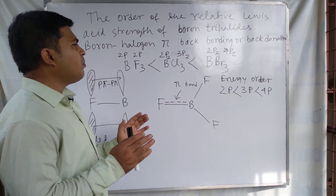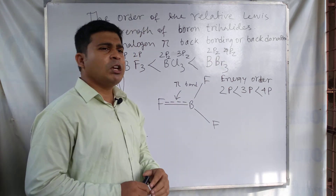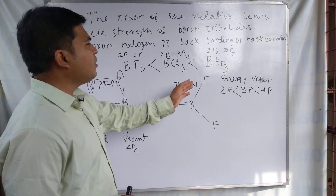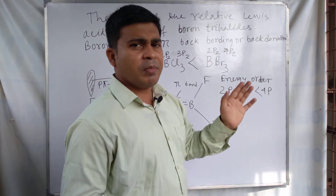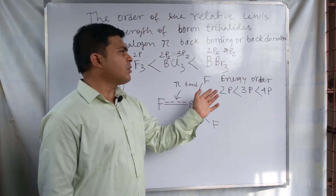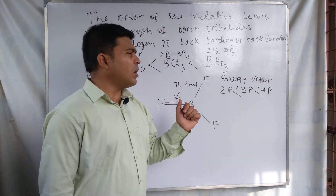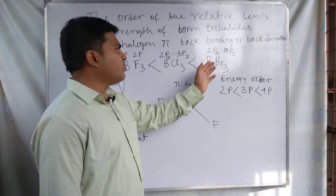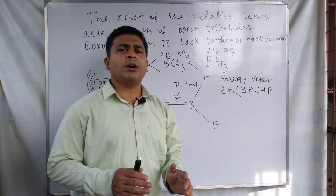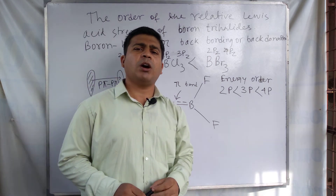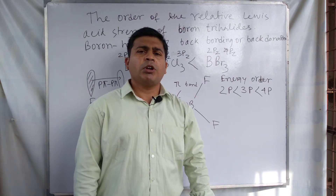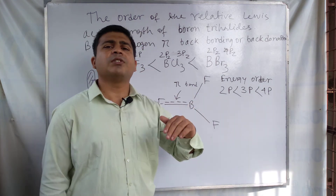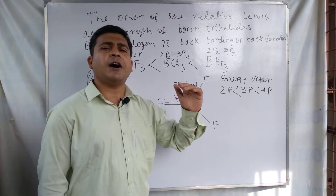Since pi back donation is decreased in BBr3, the electron density of boron is not removed, and for this reason BBr3 has the maximum Lewis acid character. This explains the order: BBr3 > BCl3 > BF3, where BF3 has the least and BBr3 has the highest Lewis acid strength.